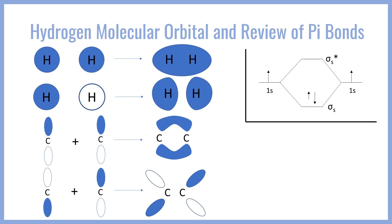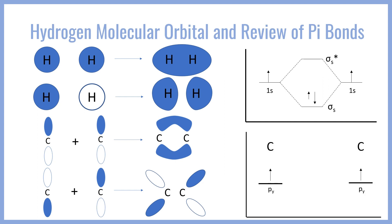What would that look like in a molecular orbital diagram? It would be the two carbon atoms and their p orbitals combining to give a pi bonding orbital, which will fill in with electrons, and then the pi antibonding orbital, which will remain empty since in this case we only have two electrons filling in.